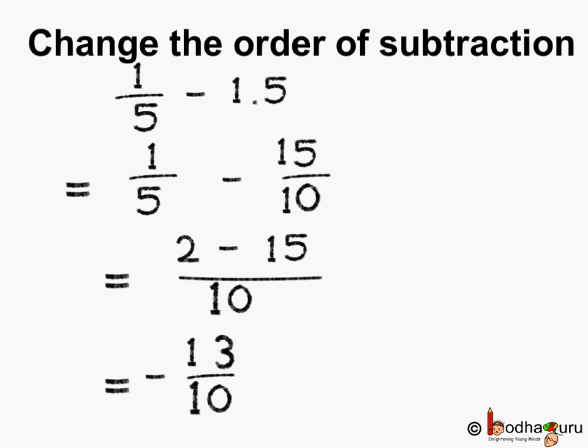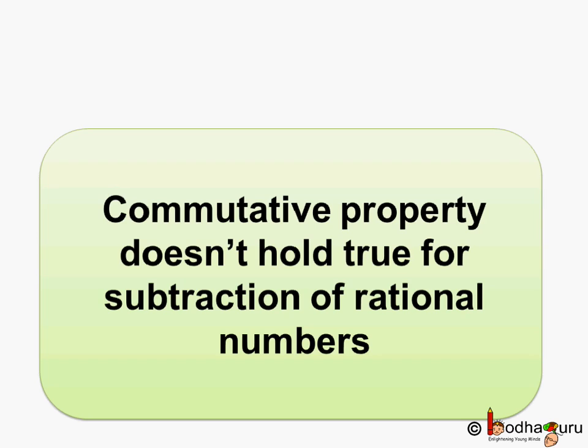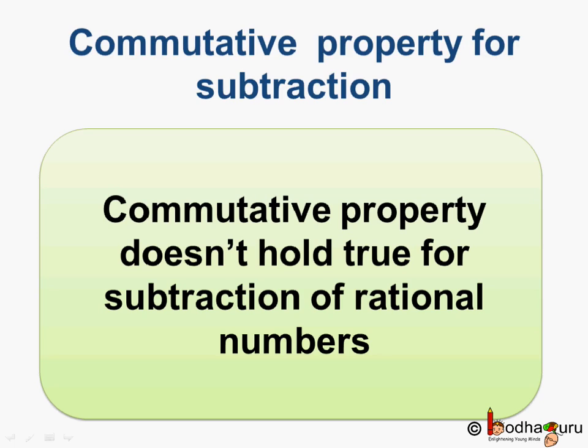What do we see? The answer is not the same when we change the order of subtraction. In the first case it was 13 by 10 and now it is minus 13 by 10. So we can say commutative property does not hold true for subtraction of rational numbers.